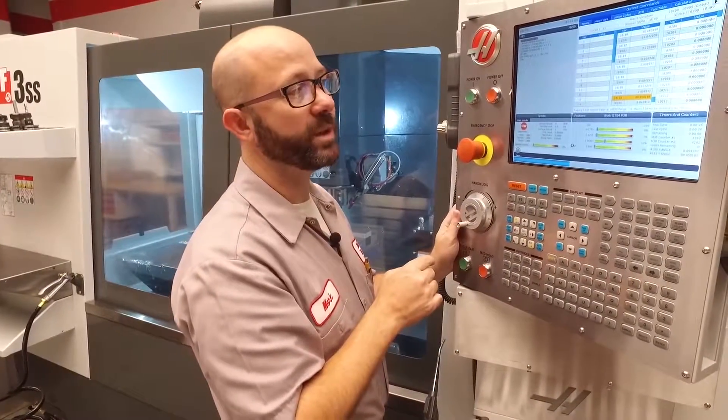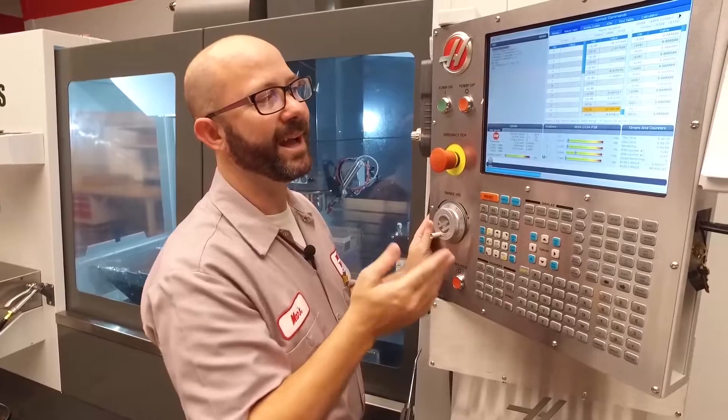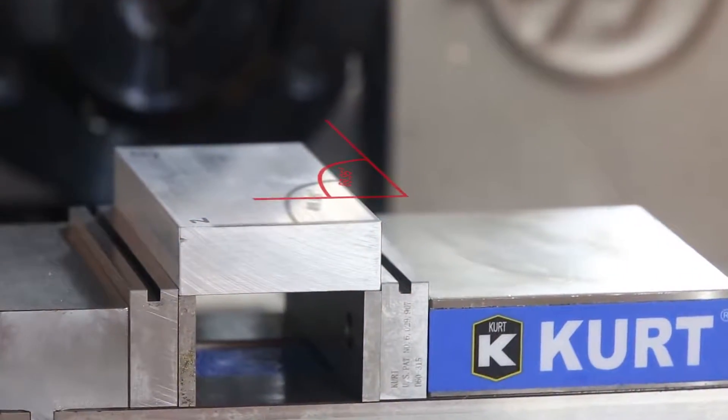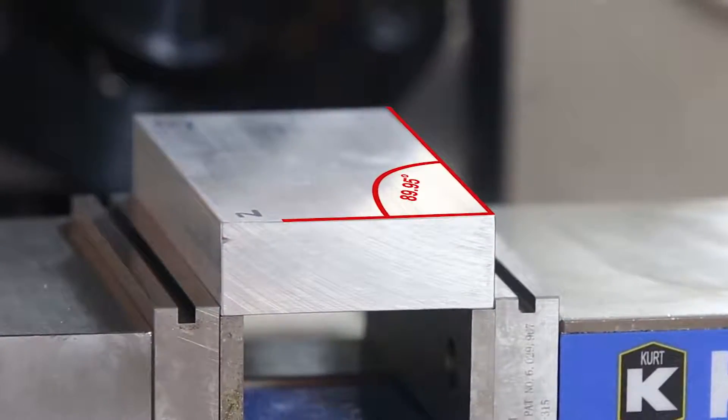So, our 10192 is 89.95 degrees. That's a saw cut surface. It's not perfectly at 90 degrees, but we expected that.